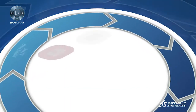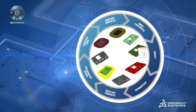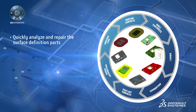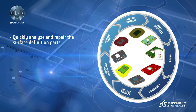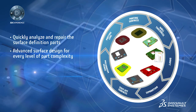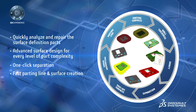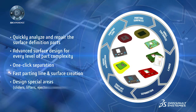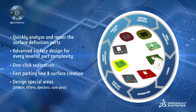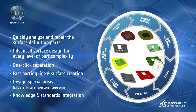These capabilities enable the fast and efficient preparation of mold areas, even for the most complex of tool shapes, and include assisted detection and repair of part design defects such as geometry gaps or overlaps, advanced surface design strategies to tackle every level of complexity, one-click separation of cores and cavities, powerful wizards for creating parting lines and surfaces, assisted detection of special areas such as sliders, lifters, ejectors, and core pins, and automated and customizable knowledge-based design of shut-off areas.